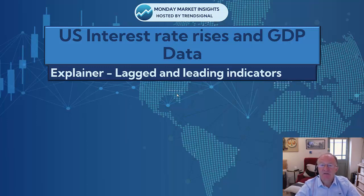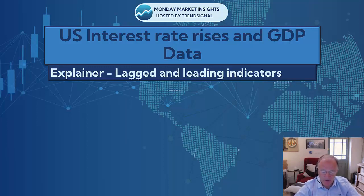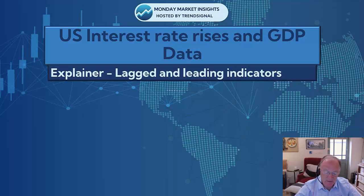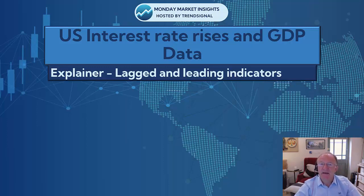A lagged or lagging indicator is a data release that really tells us what has happened in the past. So for example, with GDP data or gross domestic product, this report tells us what economic activity was in the previous quarter. And in the case of the US, they have three releases — the advance, the prelim, and the regular one. And this data does take a long time to collate.